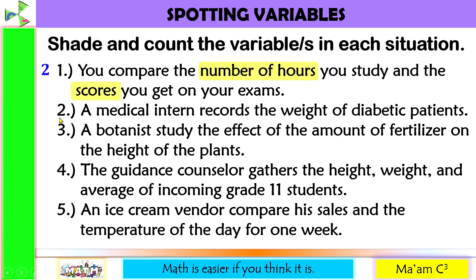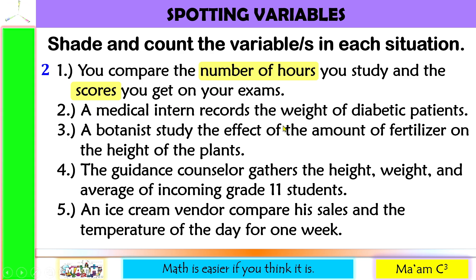Number two: a medical intern records the weight of diabetic patients. What could vary here? What do we measure? The weight of diabetic patients. We only have one variable here.